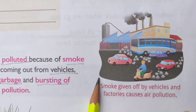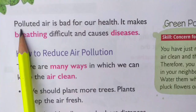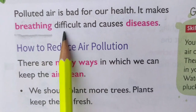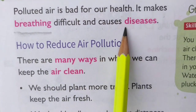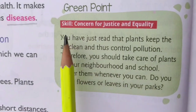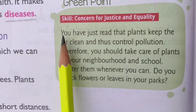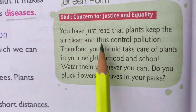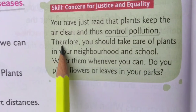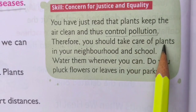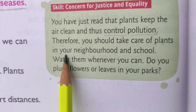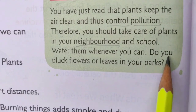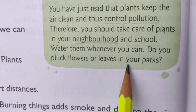Children, this is the picture of polluted air. Polluted air is bad for our health. It makes breathing difficult and causes diseases. Green point — Skill: Concern for justice and equality. You have just read that plants keep the air clean and thus control pollution. Therefore, you should take care of plants in your neighborhood and school. Water them whenever you can. Do you pluck flowers or leaves in your parks?